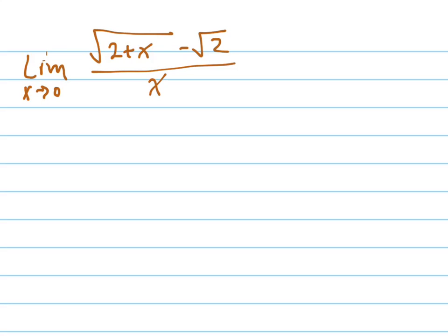We're going to take the limit as x goes to 0 of this function. Notice that I can't plug in 0. If I just plugged in 0 right here and here, I would be dividing by 0. In fact, I'd have 0 divided by 0, which I can't do. So I can't just plug in the value — it would be nice if I could, because then that would be the answer. But I can't.